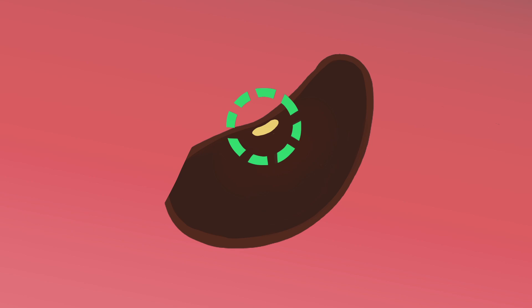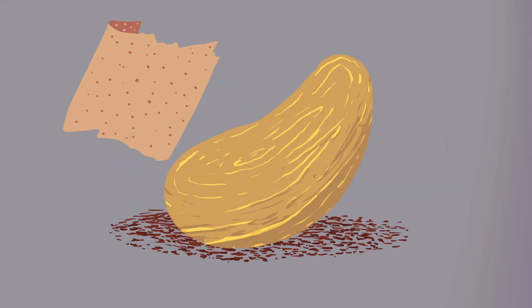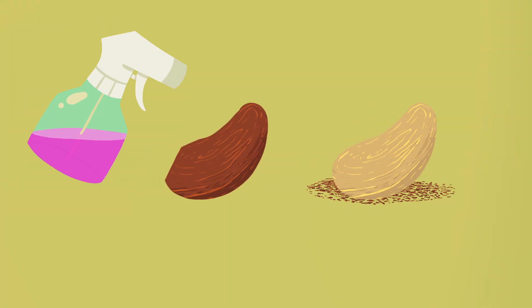Another way is to file down the seed coat using sandpaper or a nail file. Once again, you don't want to file too much, just enough to wear down some of the seed coat. After applying either of these methods, you'll want to spray the seeds with bleach to prevent mold.